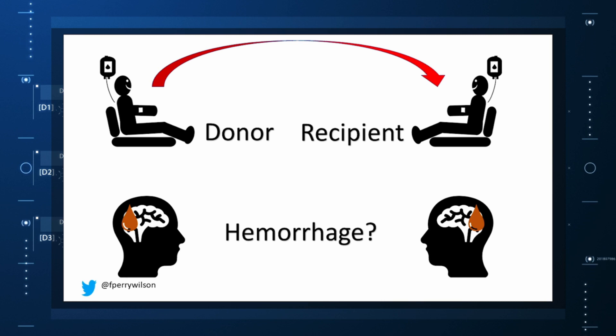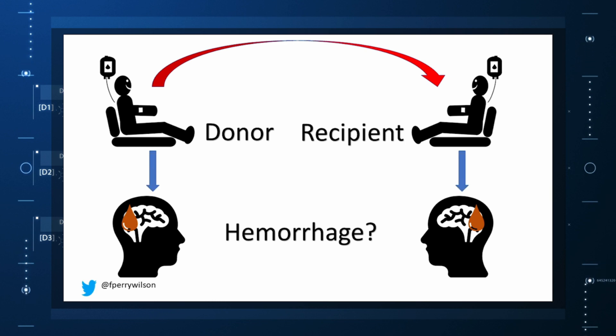We know that a decent percentage of people who have spontaneous brain bleeds have CAA. If those people donated blood in the past, maybe the people who received that blood would be at risk for brain bleeds too. Of course, to really test that hypothesis, you'd need to know who every blood donor in a country was and every person who received that blood and all their subsequent diagnoses for basically their entire lives.